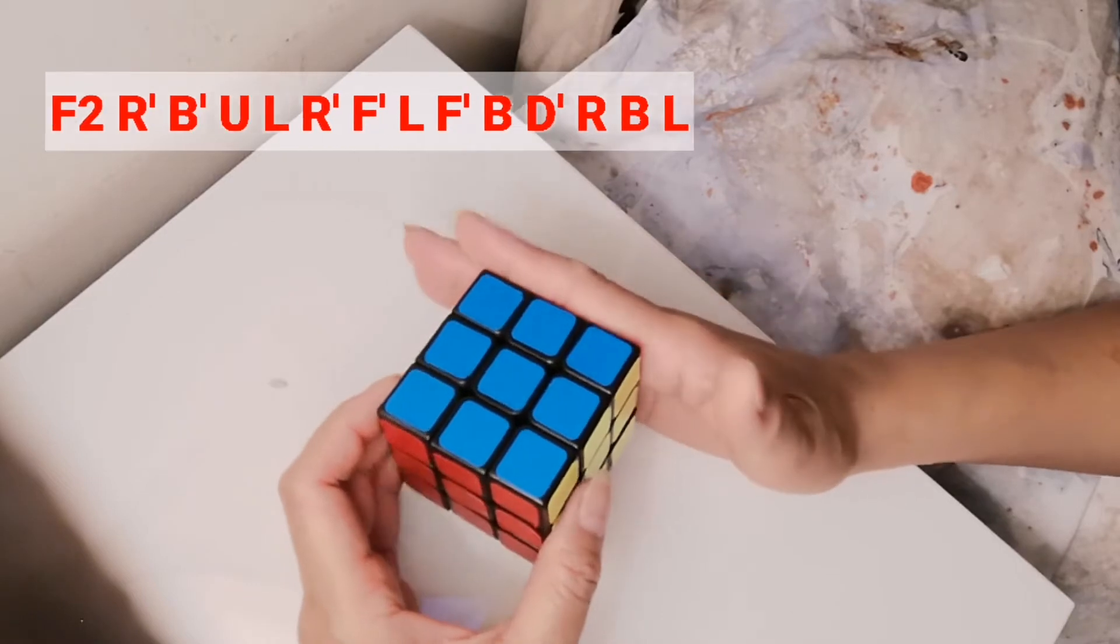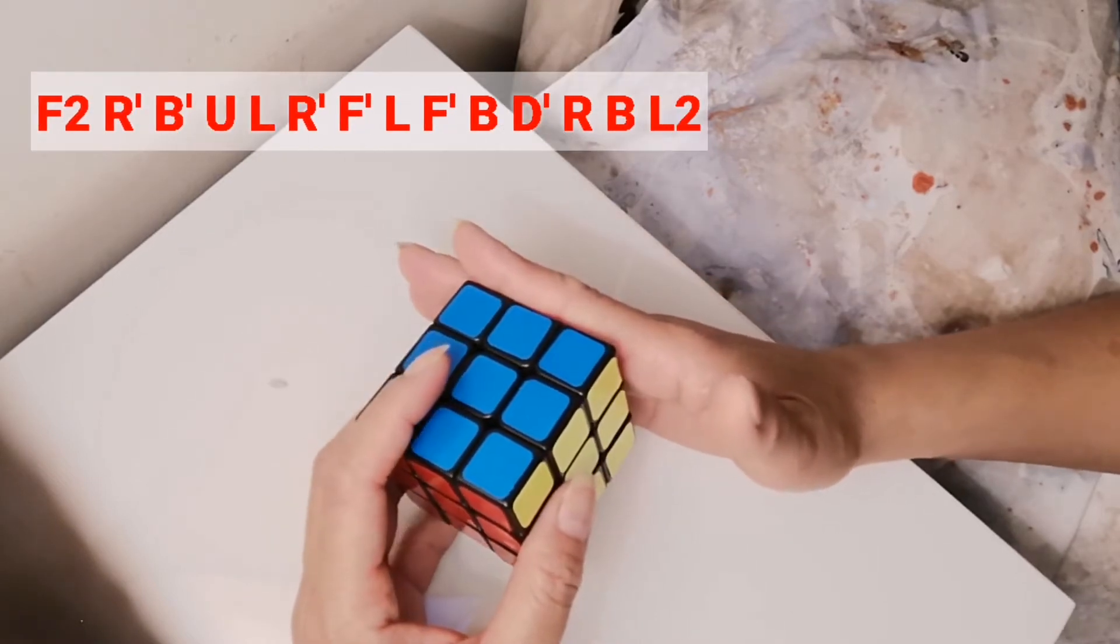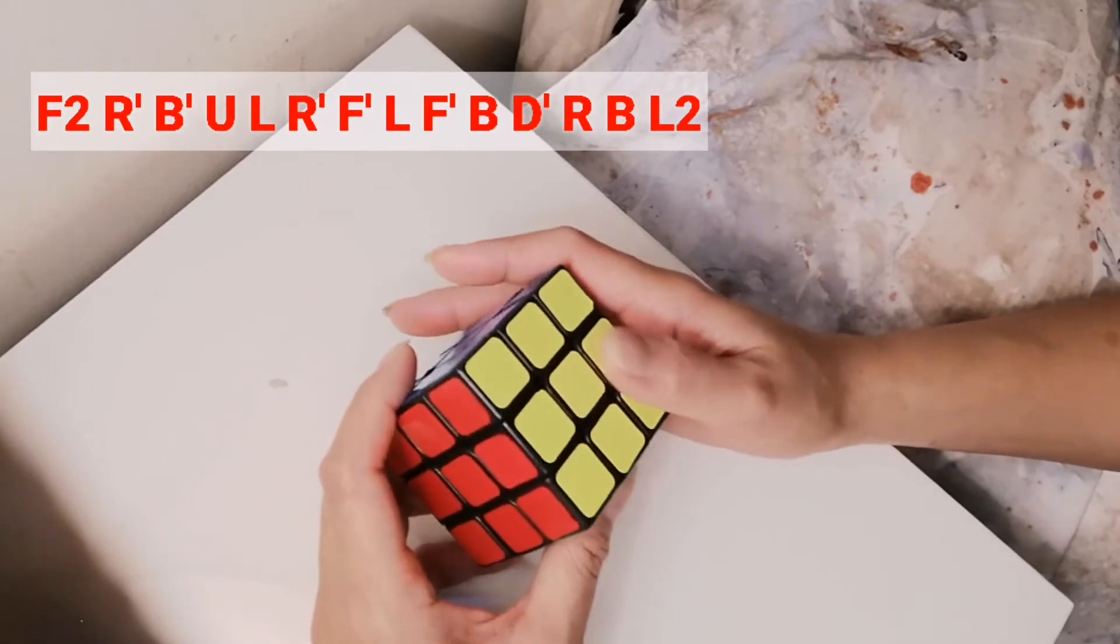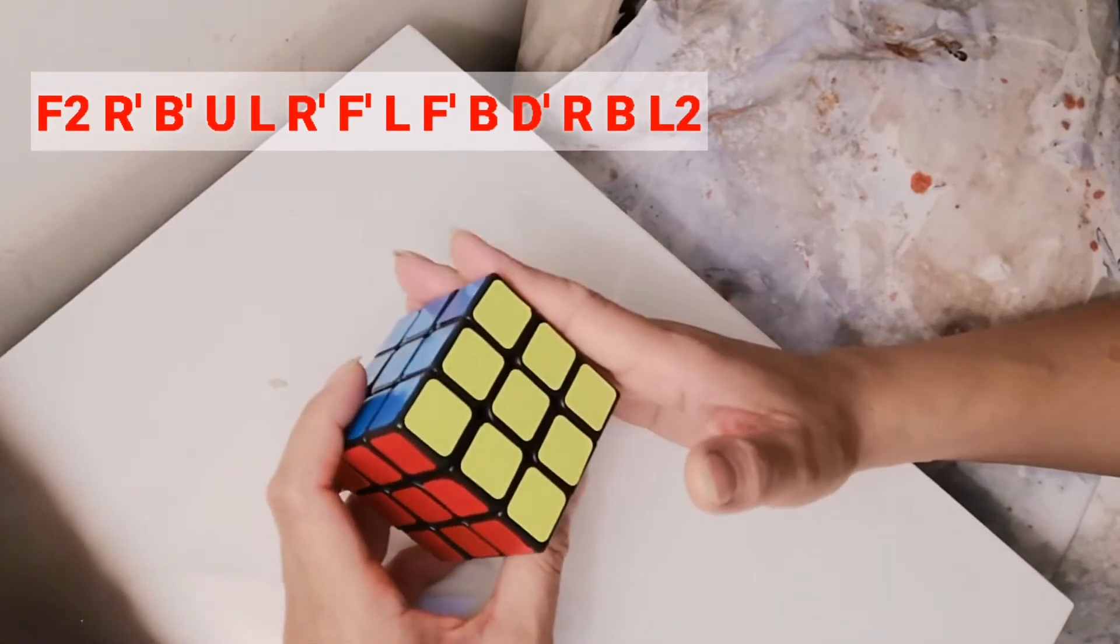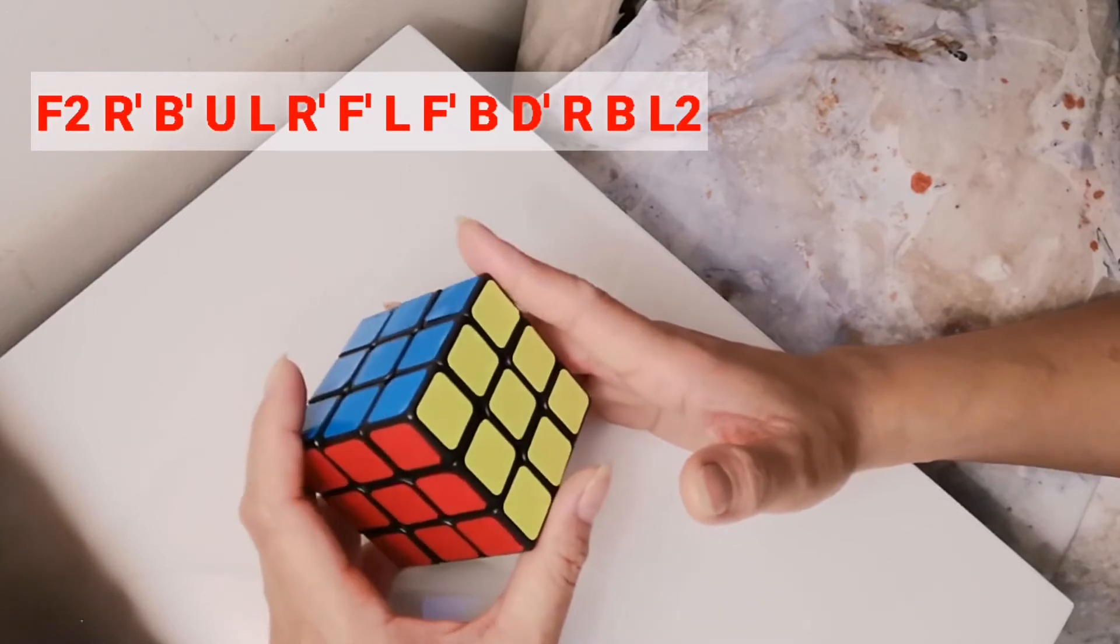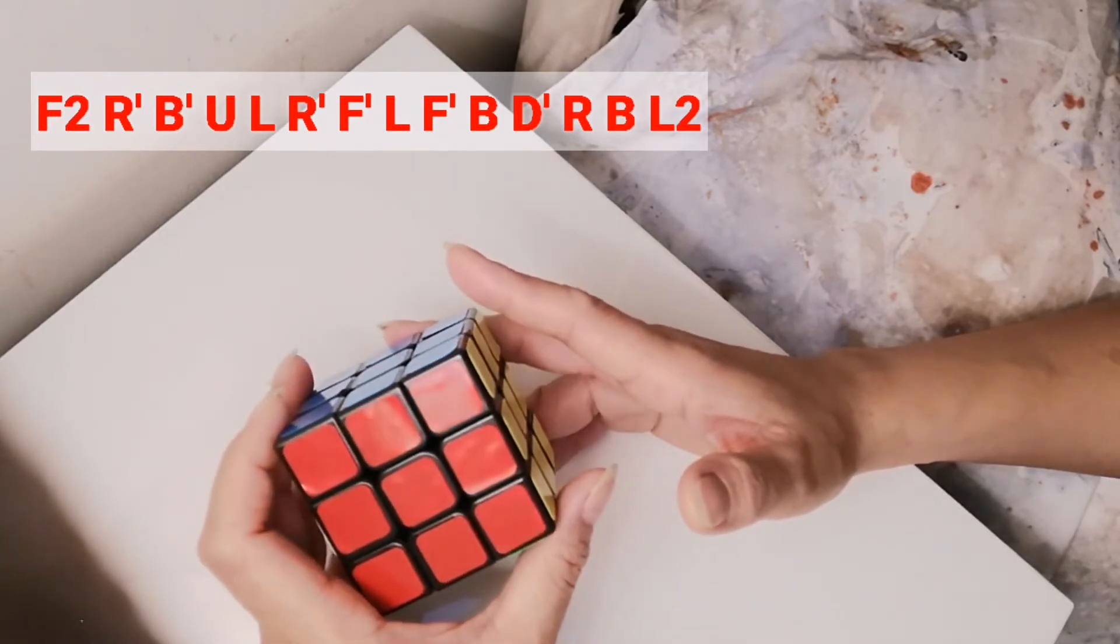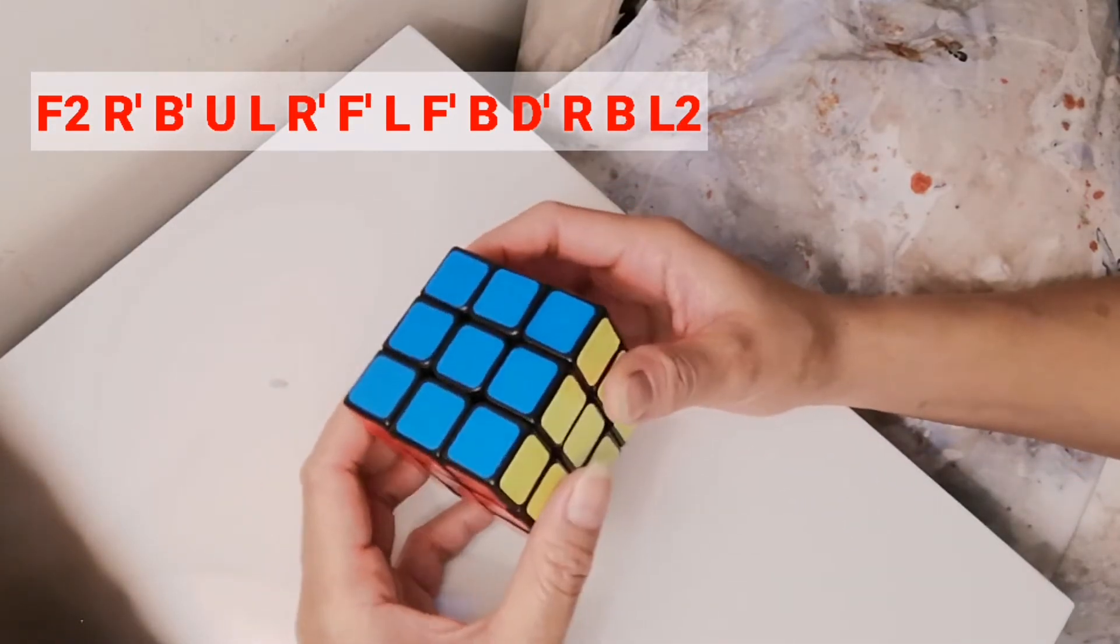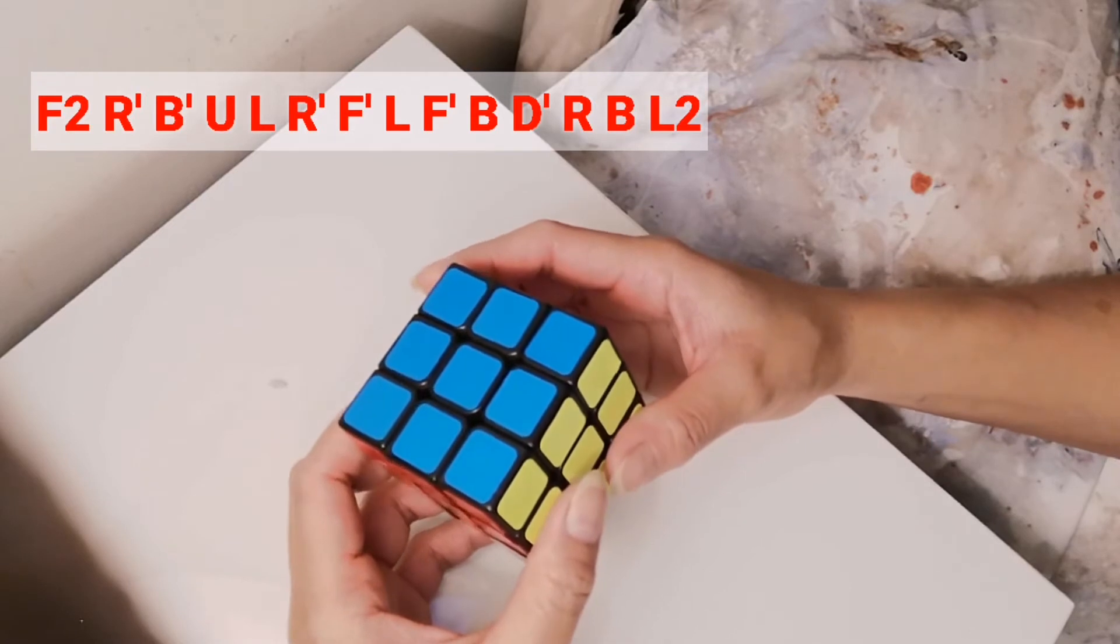The algorithm that we are going to use is F2 R' B' U L R' F' L F' B D' R B L2. So let's start to make a python pattern.